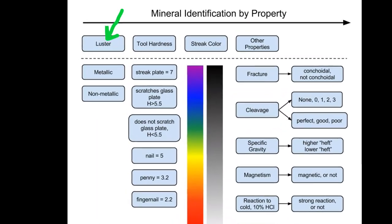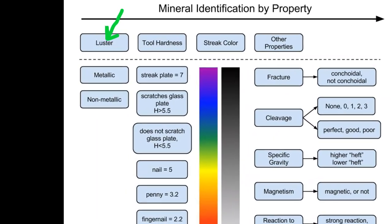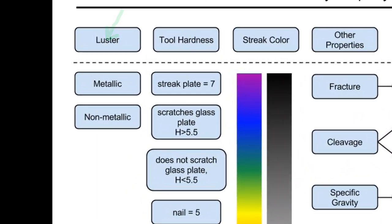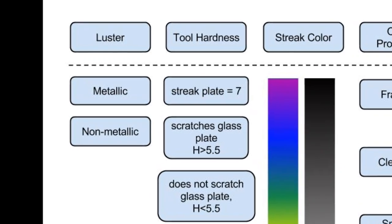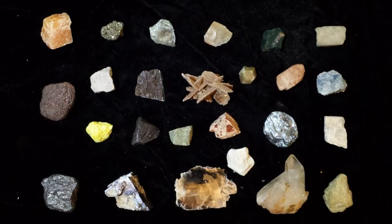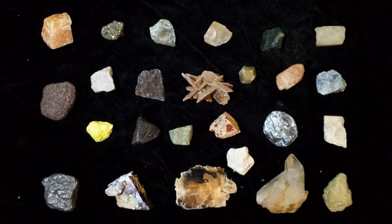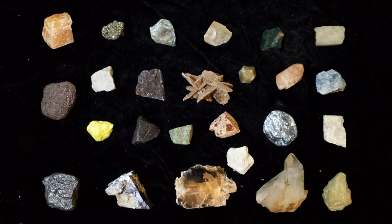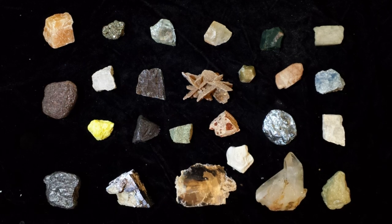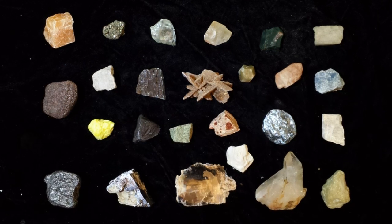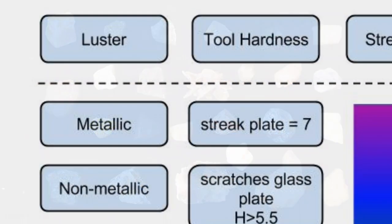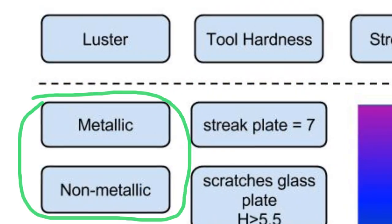Luster is a property that describes how light interacts with the surface of a mineral. Because natural mineral surfaces vary greatly in their reflectance and absorption of light, there are numerous terms for luster. Here are a few.